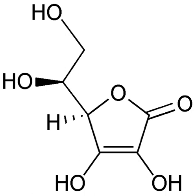Photosynthesis and cellular respiration are complementary, but photosynthesis is not the reverse of the redox reaction in cell respiration. The equation for photosynthesis is: 6CO2 + 6H2O + light energy → C6H12O6 + 6O2. Biological energy is frequently stored and released by means of redox reactions. Photosynthesis involves the reduction of carbon dioxide into sugars and the oxidation of water into molecular oxygen. The reverse reaction, respiration, oxidizes sugars to produce carbon dioxide and water.